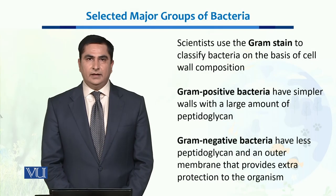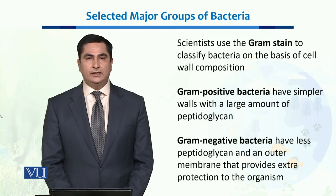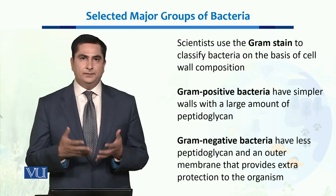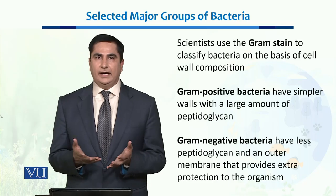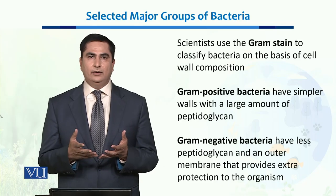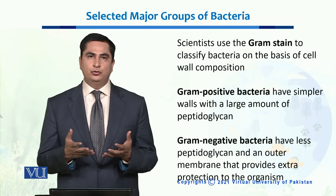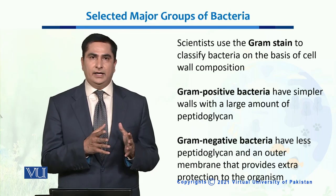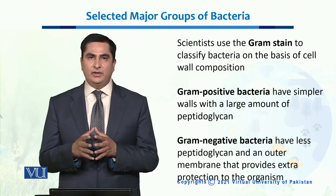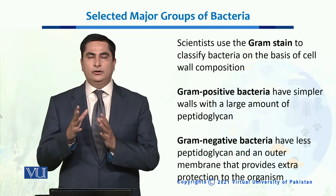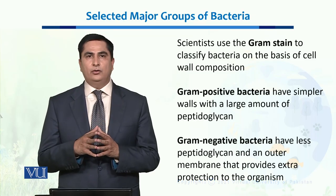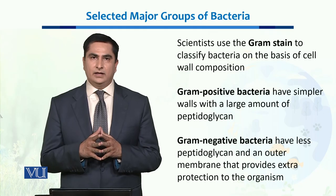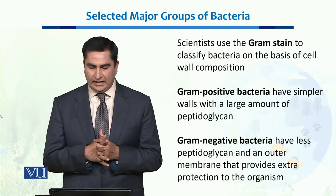In this unit we will talk about some selected major groups of bacteria. We can classify bacteria easily on the basis of gram staining into two major groups. Those who retain crystal violet dye are called gram positive bacteria, while those bacteria who cannot retain crystal violet dye are called gram negative bacteria.